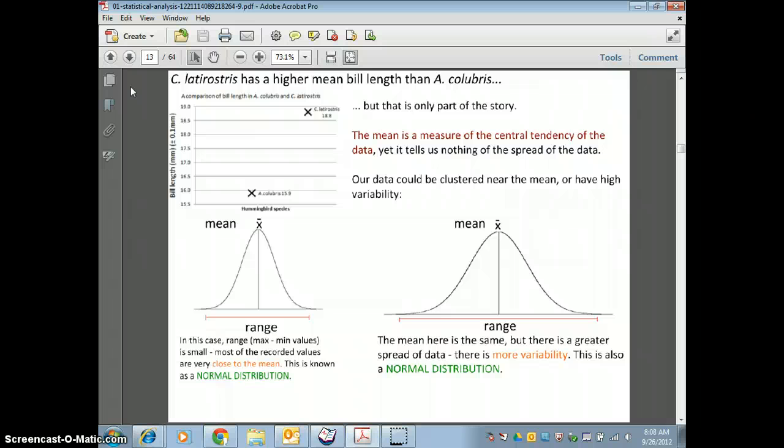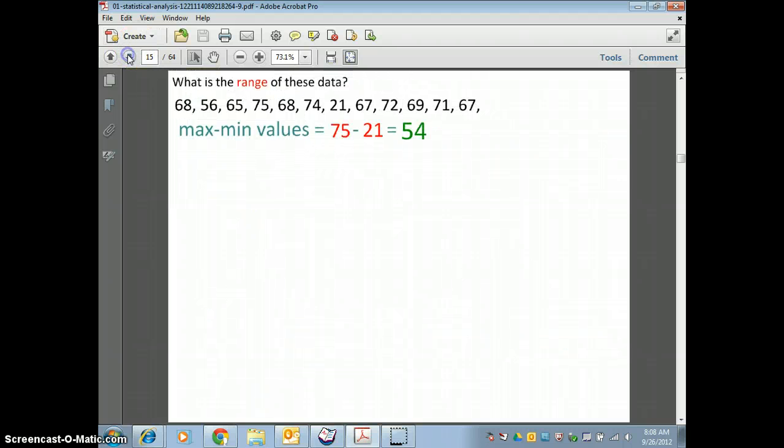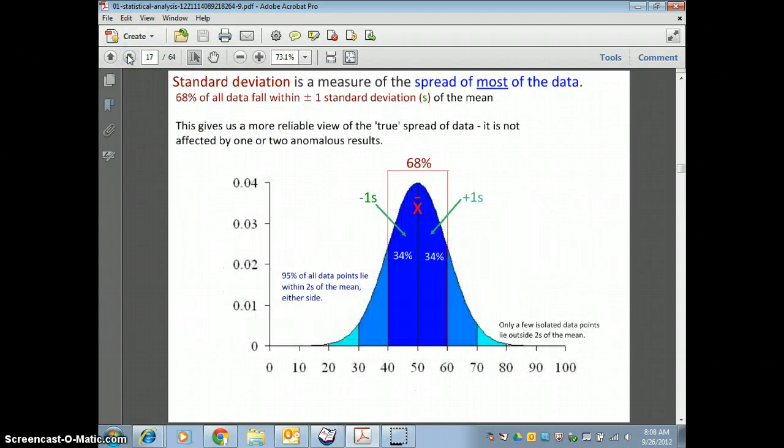And then we see that the standard deviation in this graph has a lower standard deviation, which means we can be more confident in this data, whereas this graph over here shows that there's a higher standard deviation, and so that means the data is more variable and more spread out. Most of the data falls within, 68% of the data will fall within plus or minus 1 standard deviation of the mean, and that 95% of the data points lie within 2 standard deviations of the mean. You have to remember those numbers.